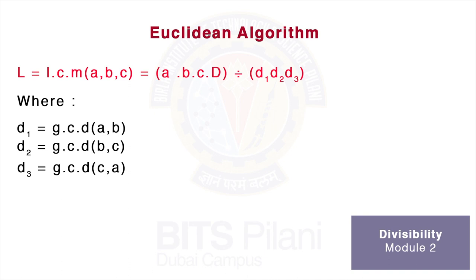D₂ is GCD(b,c), and D₃ is GCD(c,a). Capital D is the GCD of a, b, and c.